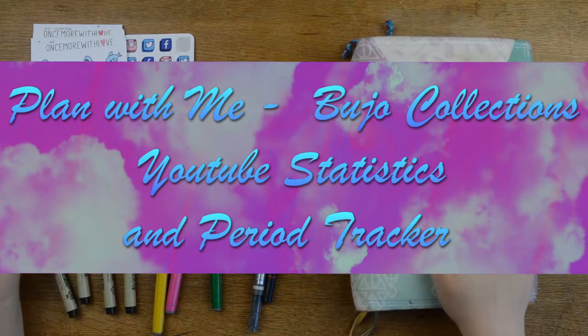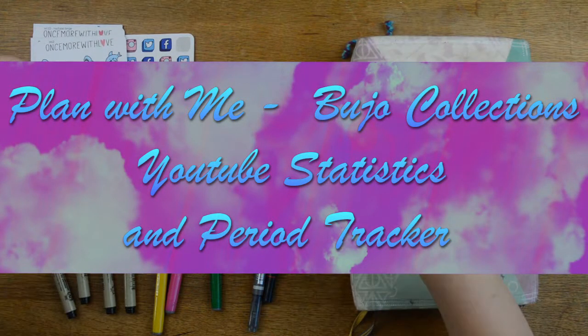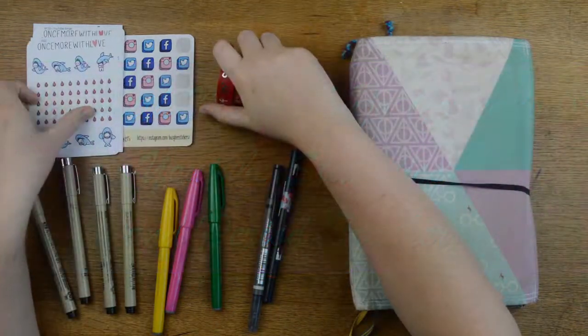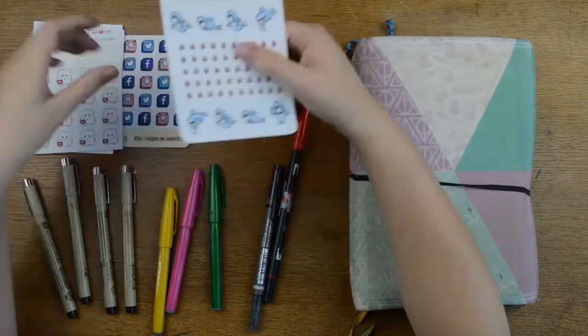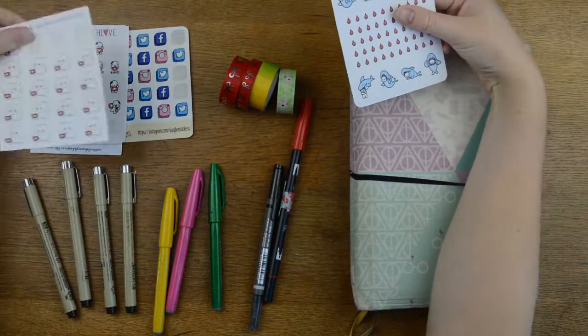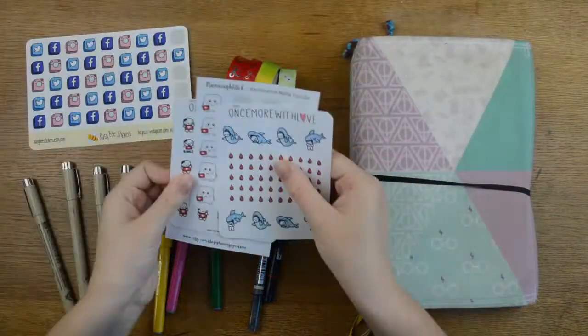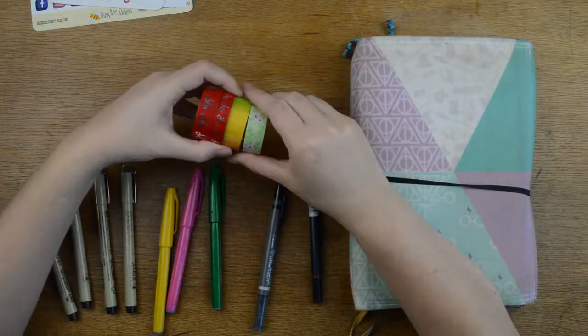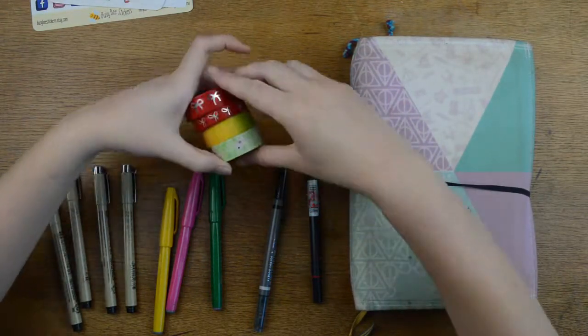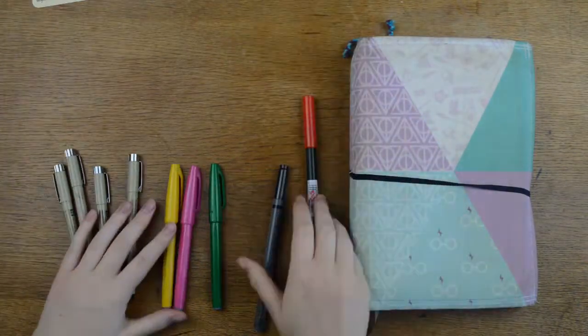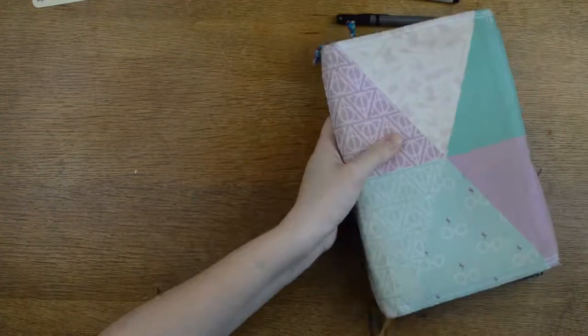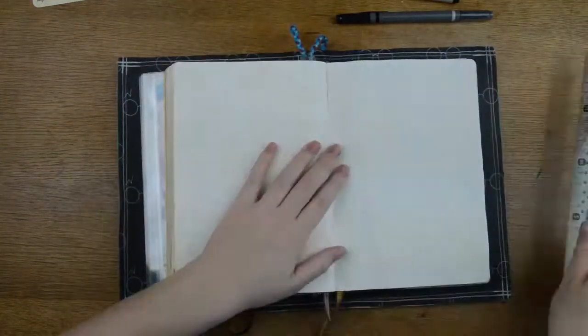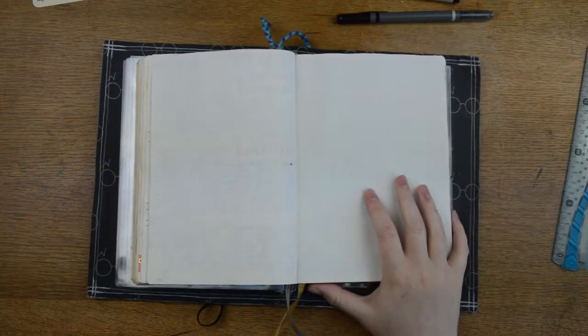Hello, it's Tilly from Tilly Journals and I'm here with a collection bullet journal video. I'm going to do a period tracker and a YouTube stats thing. I've got a few stickers pulled out here, three Simply Gilded washis and a different washi as well. We have two blank pages here that we're going to do them in, and I'm going to start with the YouTube tracker on this page.